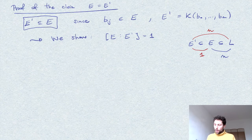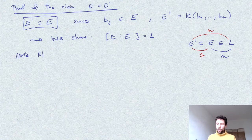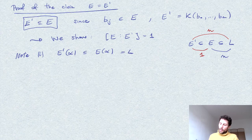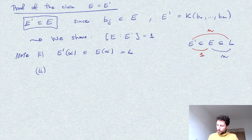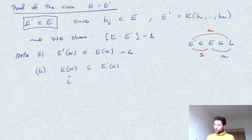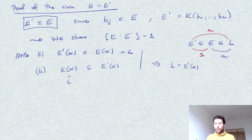So this is what we're going to do. First, we observe that if we extend E' by α, since E' sits inside E, E'(α) sits inside E(α) = L. But at the same time, k sits inside E' since E' is an extension of k, and therefore k(α) = L sits inside E'(α). From these two inclusions we can already see that L = E'(α).